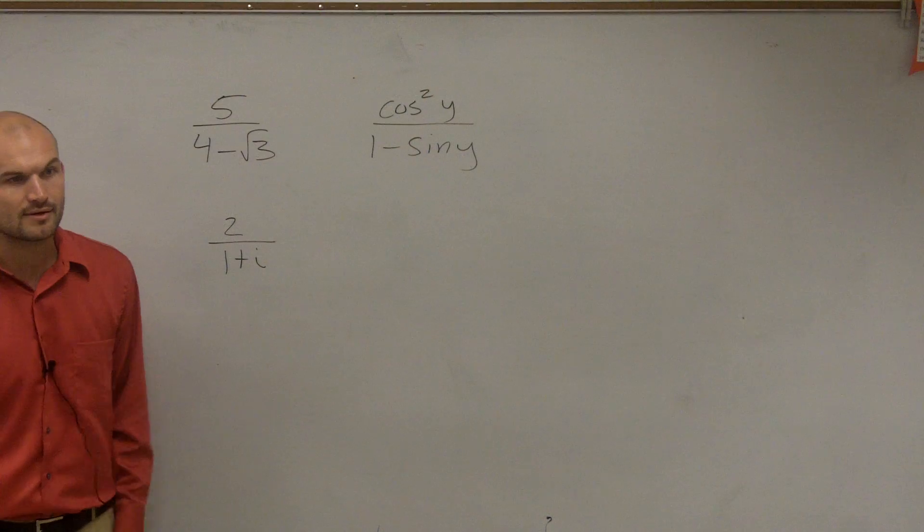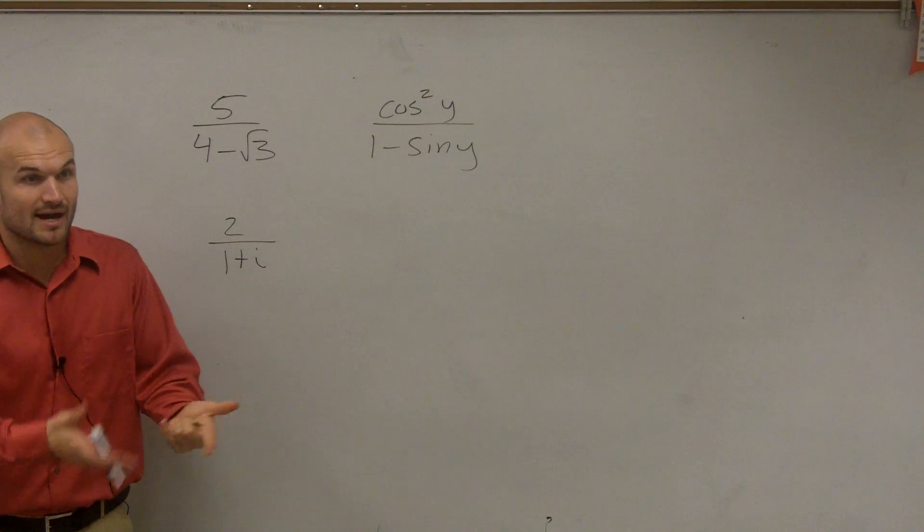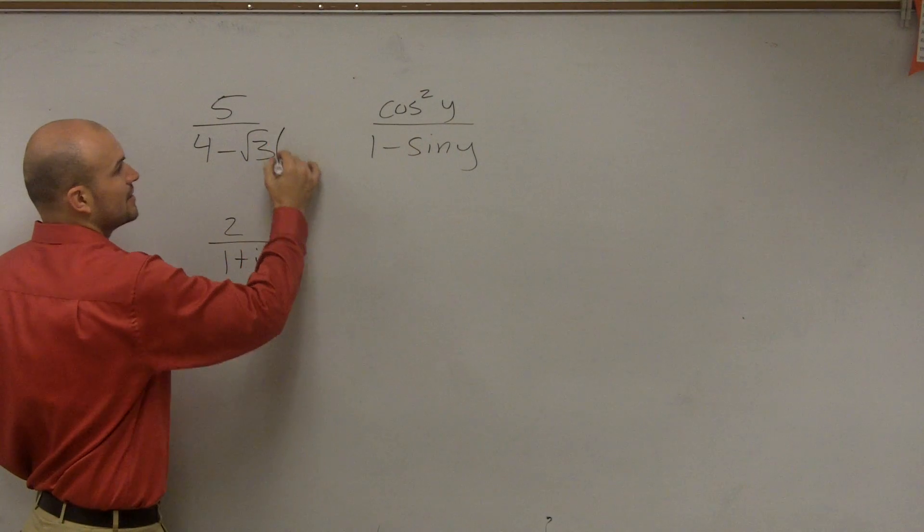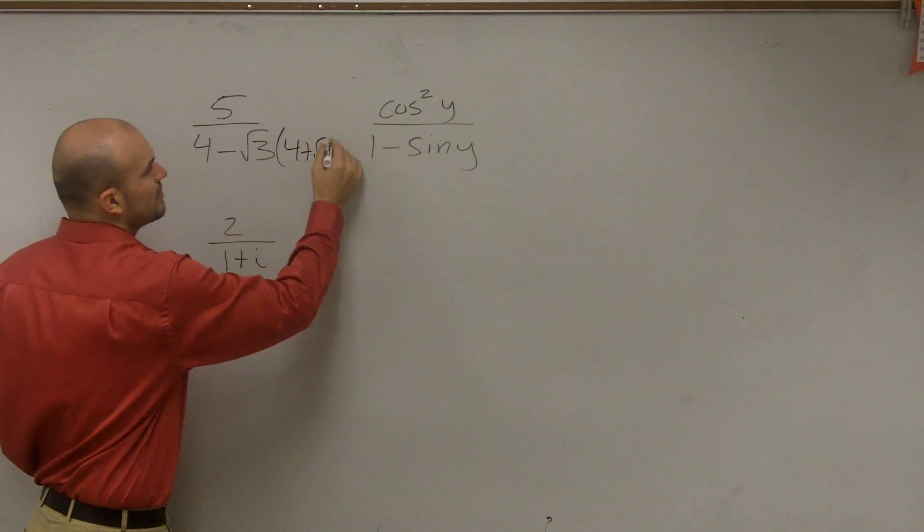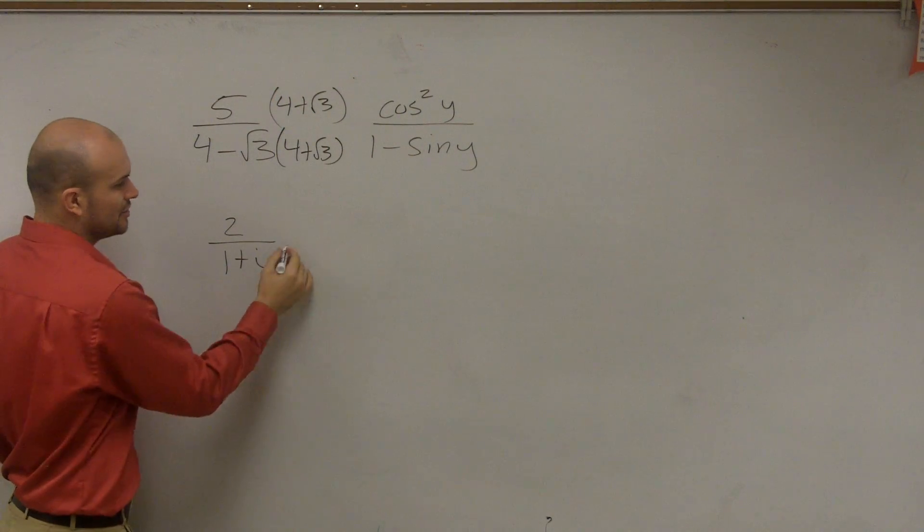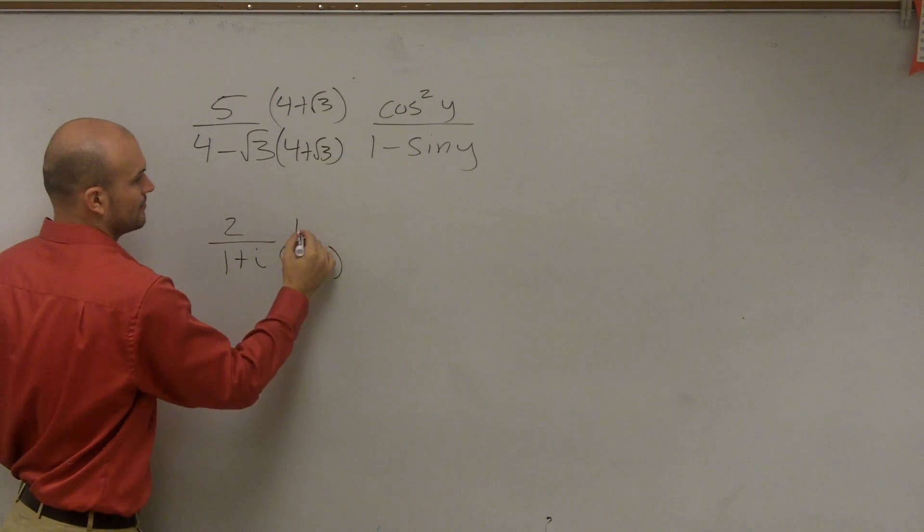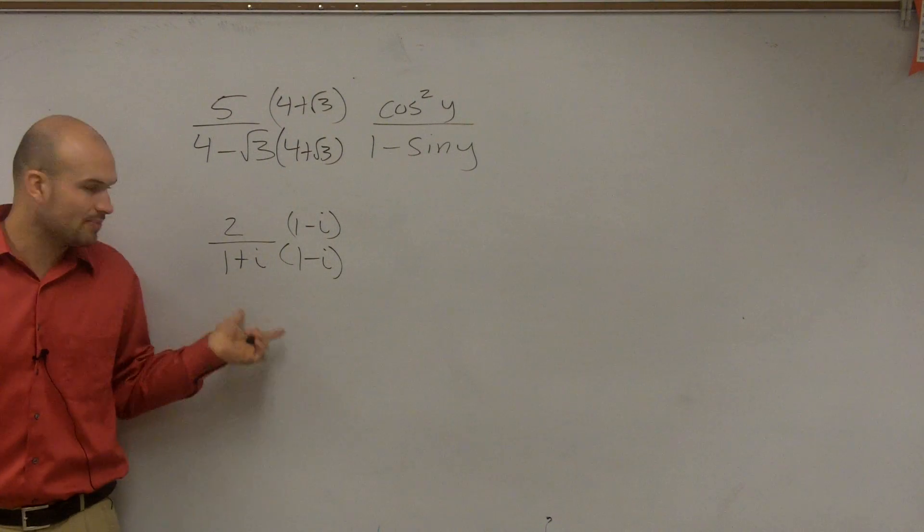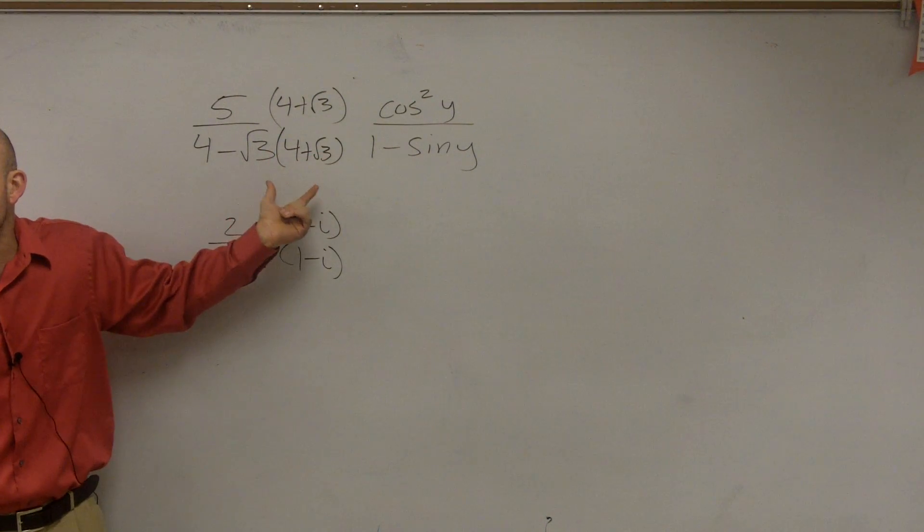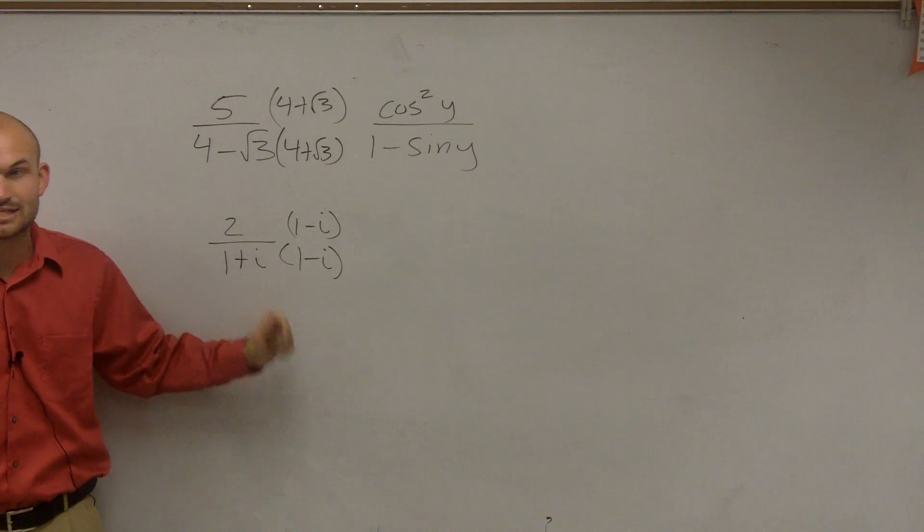The bottom, but what special part of the bottom? The conjugate of your denominator. So it would be 4 plus square root of 3. And then here you do 1 minus i. And when we multiplied a binomial by its conjugate, we got rid of our imaginary number and we got rid of our i squared.